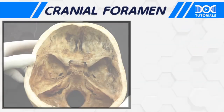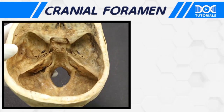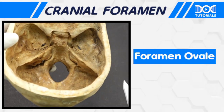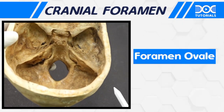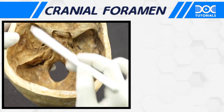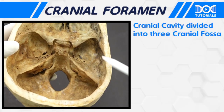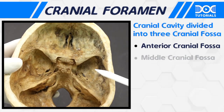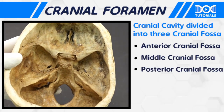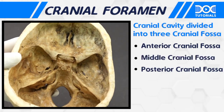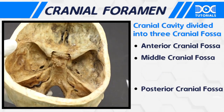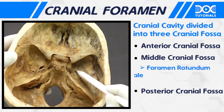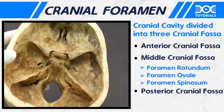In this cranium the most important one is the foramen ovale, which has been asked numerous times in your exam. This is the cranial cavity divided into three cranial fossae: the anterior cranial fossa, the middle cranial fossa, and the posterior cranial fossa. In the middle cranial fossa you are able to appreciate three foramina: foramen rotundum, foramen ovale, and the foramen spinosum.